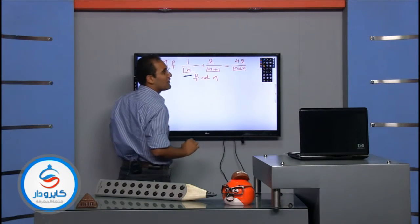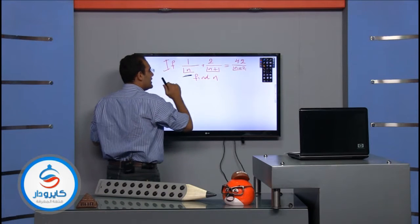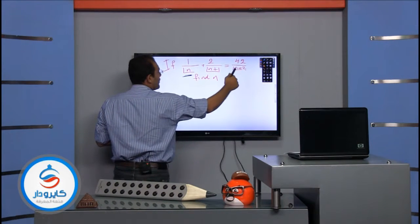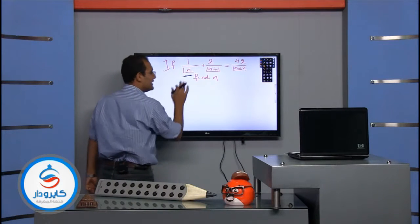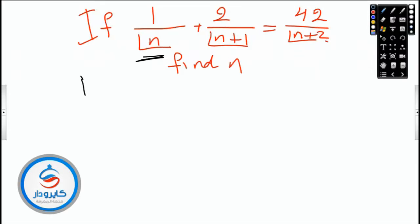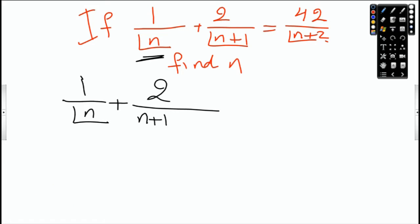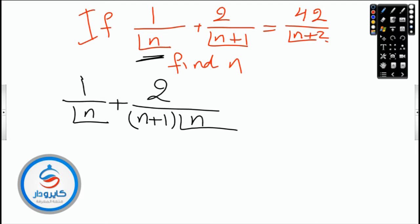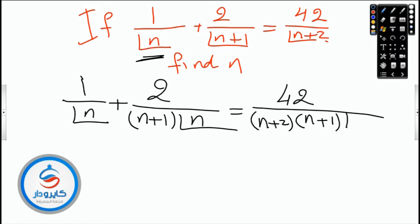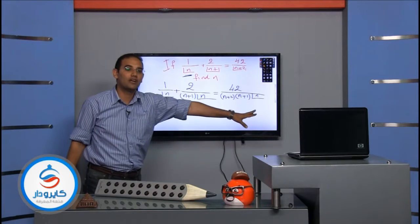We have factorial n, factorial n+1, and factorial n+2. The greatest is n+2 and the smallest is n, so we have to convert the greatest one to make all of them factorial n. For one over factorial n+2: get n+1 outside, it will be n+2 times n+1 times factorial n. Then we have factorial n in all terms — factorial n, factorial n, factorial n.